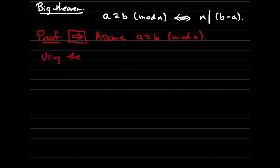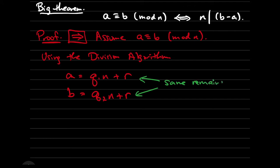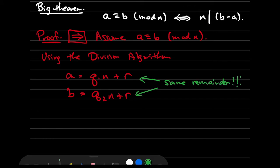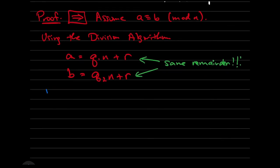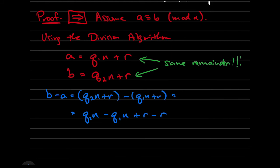So let's take the forward direction. Let us assume that A and B are congruent modulo N. By the division algorithm, this means that A equals Q1N plus R and B equals Q2N plus R. We don't really care about Q1 and Q2 here, but we do care about the remainder, and by assumption they have the same remainder. Now let's subtract B minus A, and we see that when we do the subtraction the remainders cancel, and therefore B minus A is a multiple of N. We have proven the forward direction.